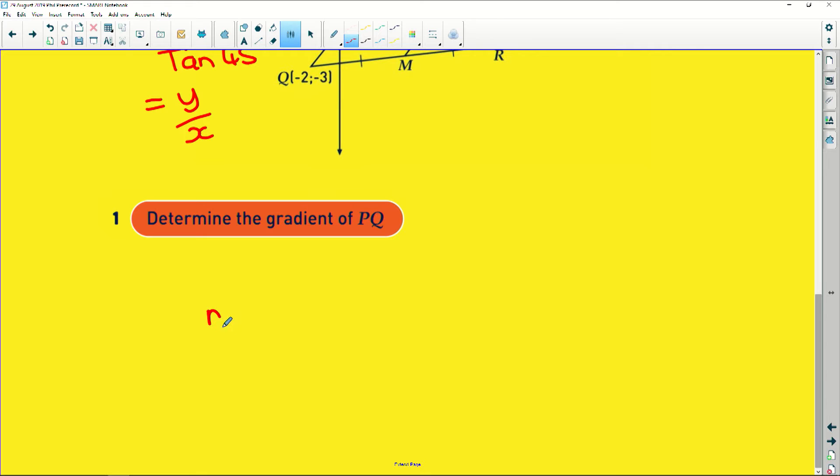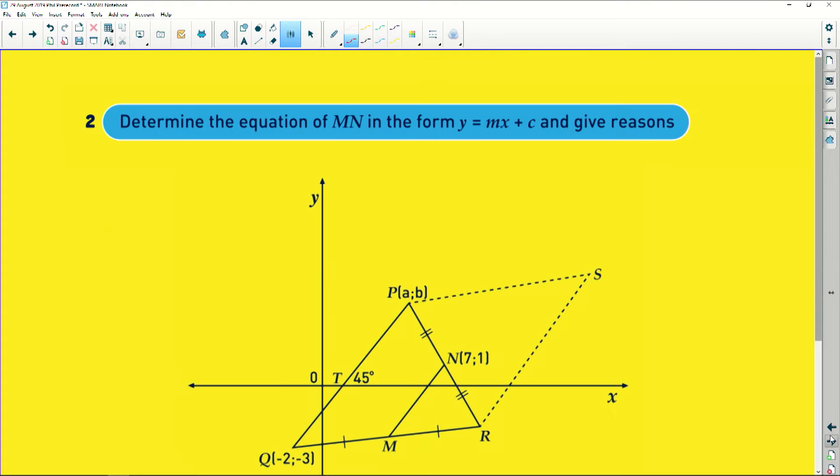In this lovely right angle triangle here, tan of 45 degrees is going to be equal to tan is y over x, which is the same as the gradient. So here, the gradient of PQ is equal to tan of 45 degrees. And if you know your special angles, tan of 45 is 1. So the gradient of PQ is 1. Easy, easy, easy peasy.